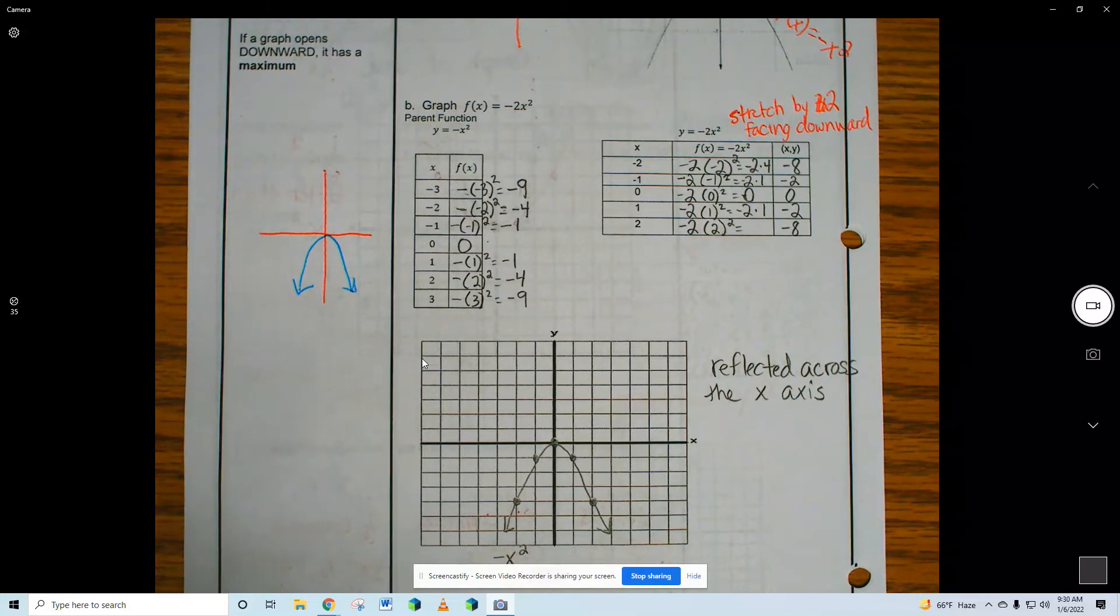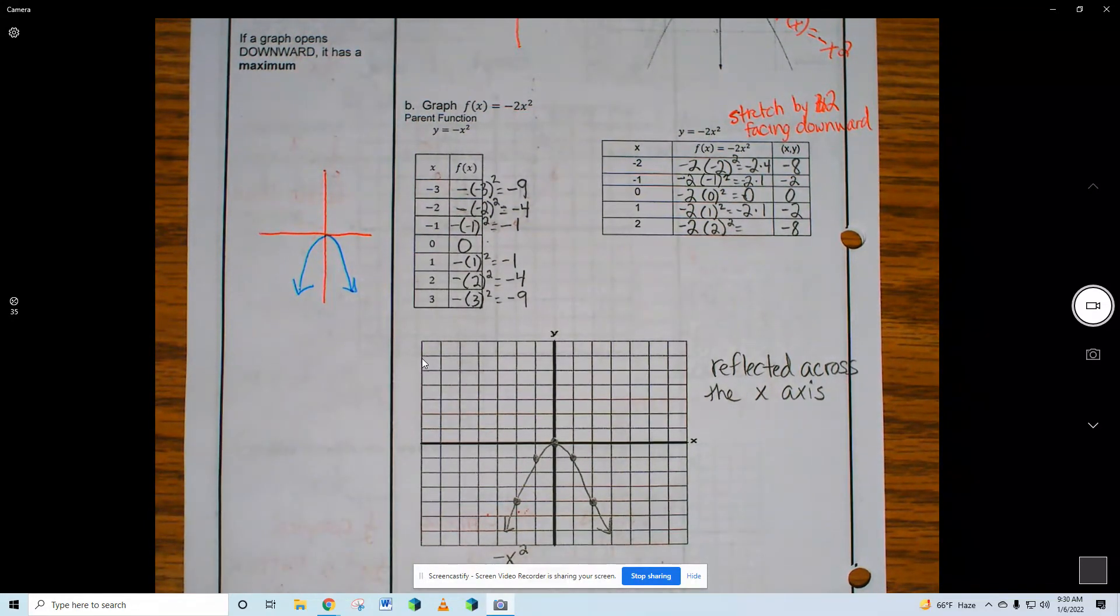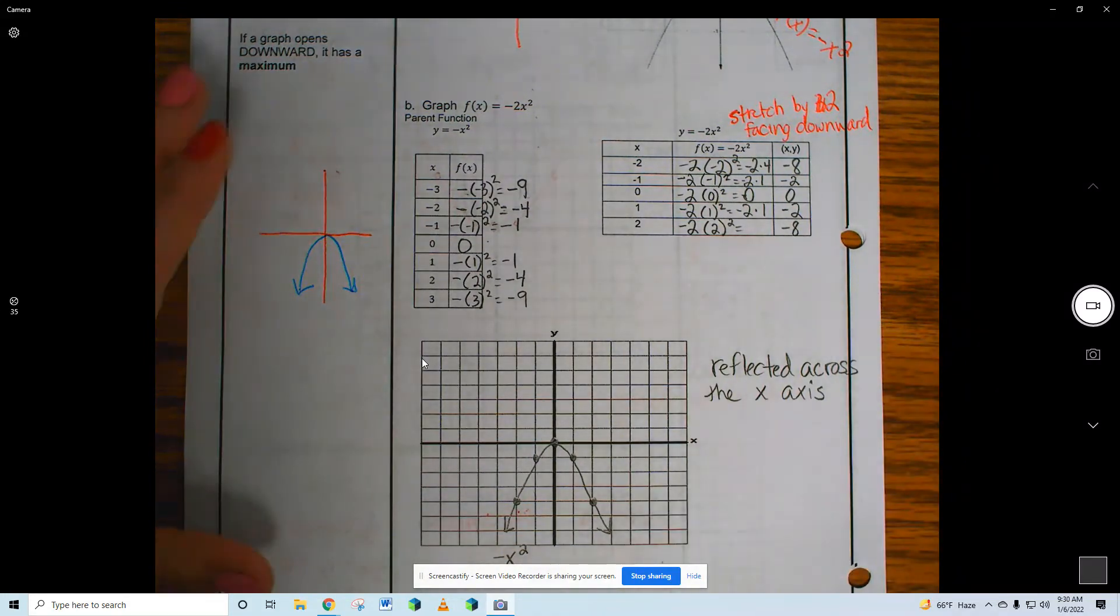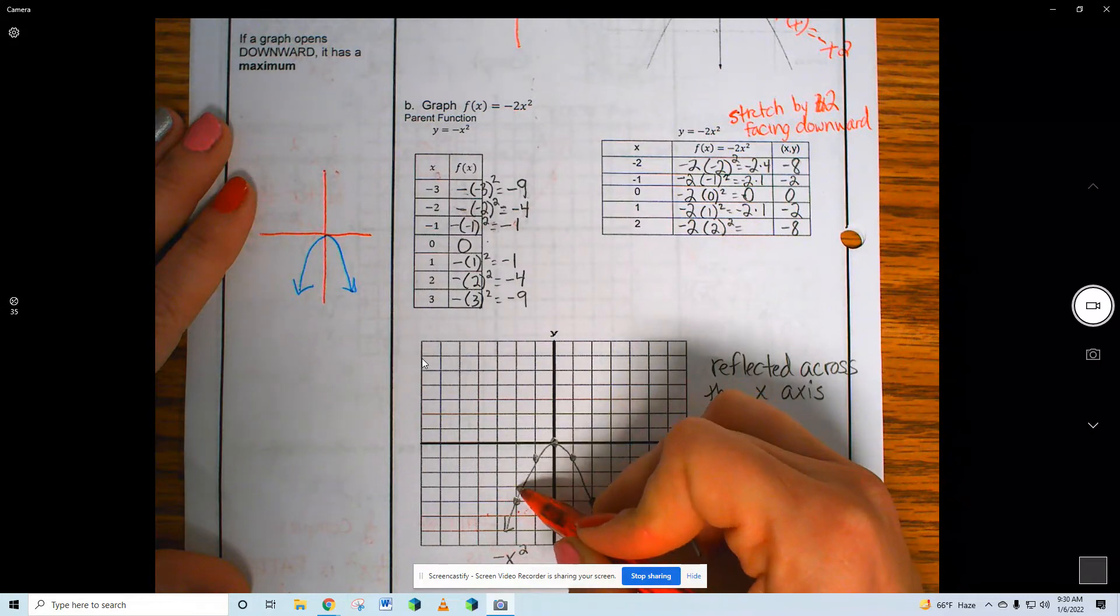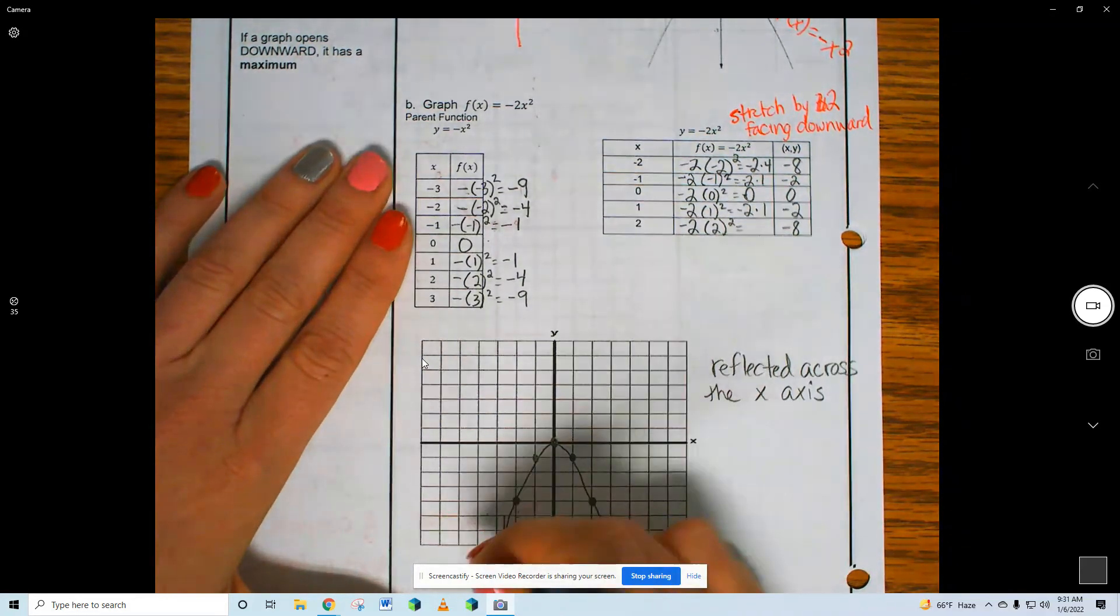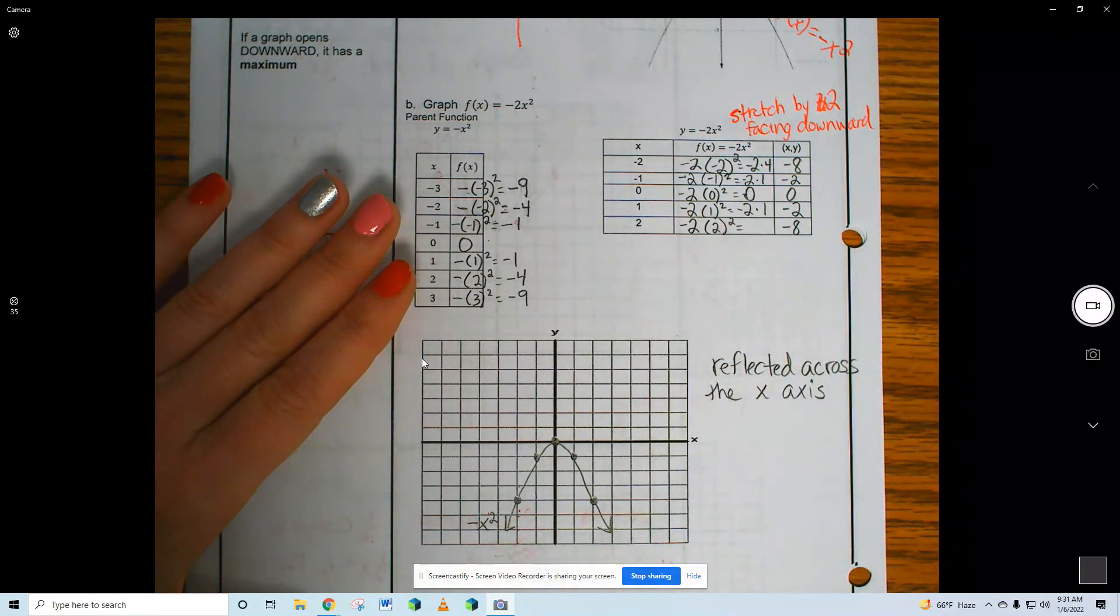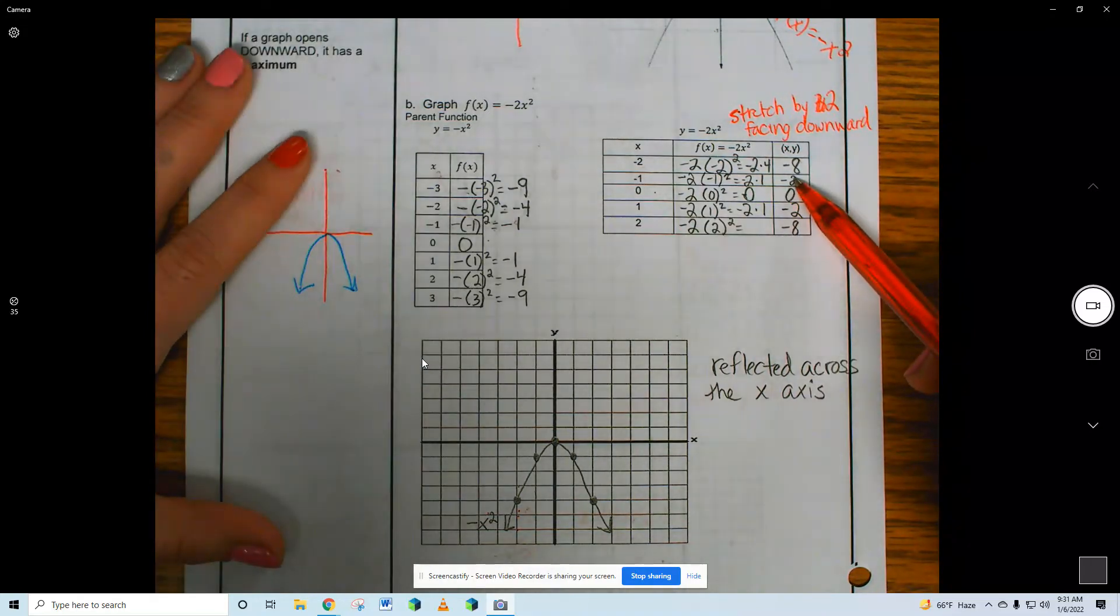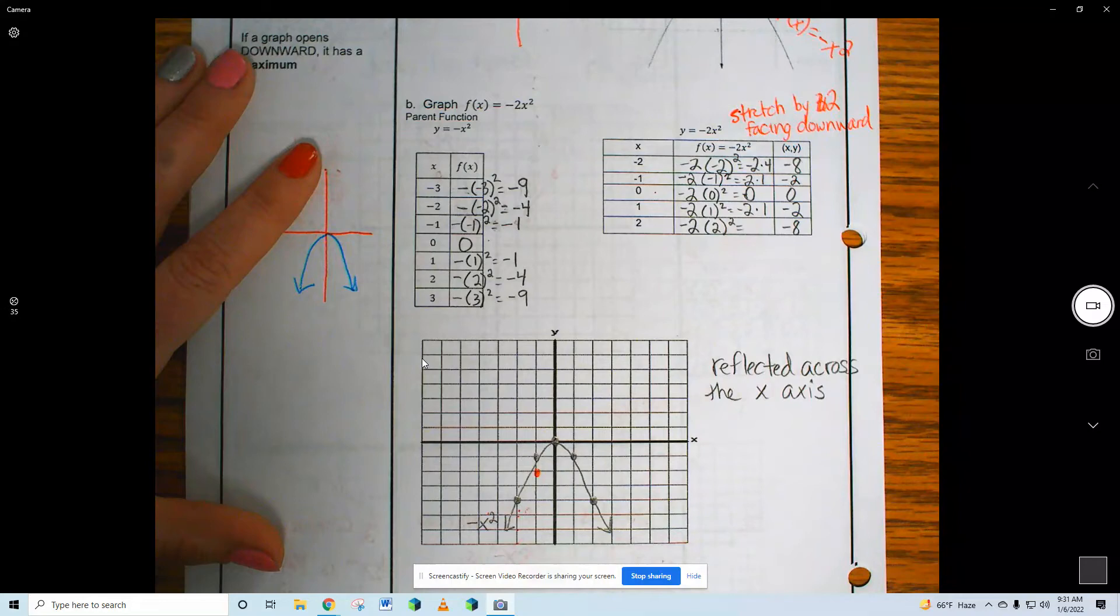So, again, if you want to do two colors, great. All right, let's plot them. Negative 2, negative 8. 2 to the left, 8 down. There, I should move that. Negative 1, negative 2. 1 to the left, 2 down. 0, 0.